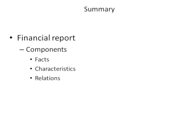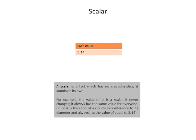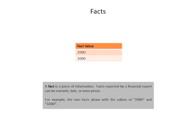To start, I want to talk about a notion that helps one understand things a little bit better: the concept of a scalar. A scalar is basically a fact that has no characteristics — it stands on its own. For example, the value of pi is a scalar. The value of pi never changes; it's the same value for everyone: 3.14. So it has no characteristics. That's a key piece to understand, and why this is important will become more clear in a moment.